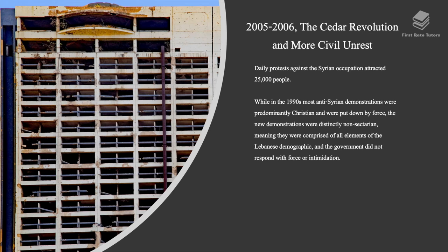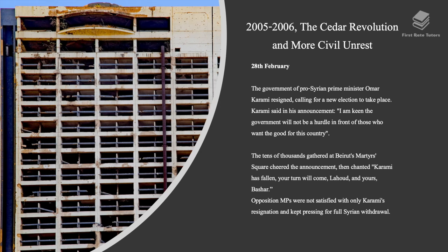Daily protests against the Syrian occupation attracted 25,000 people. While in the 1990s most anti-Syrian demonstrations were predominantly Christian and were put down by force, the new demonstrations were distinctly non-sectarian, comprised of all elements of the Lebanese demographic, and the government did not respond with force or intimidation. On February 28th, the pro-Syrian government of Prime Minister Omar Karami resigned, calling for a new election. Karami said: 'I am keen the government will not be a hurdle in front of those who want the good for this country.'